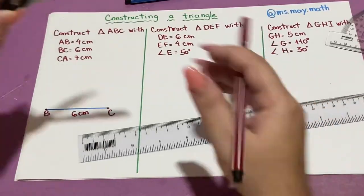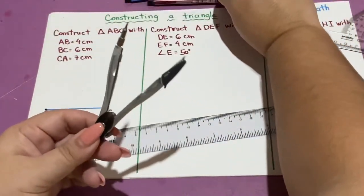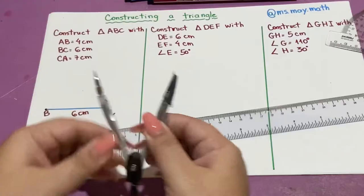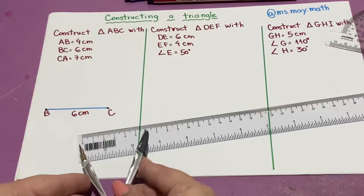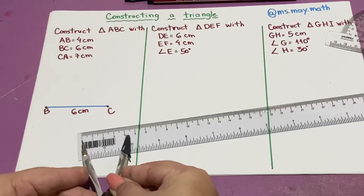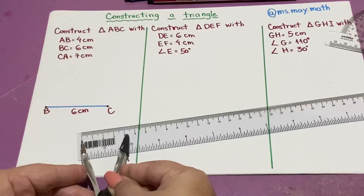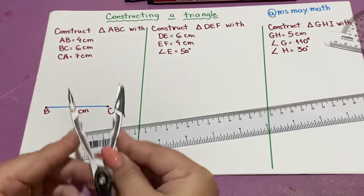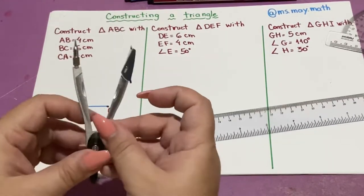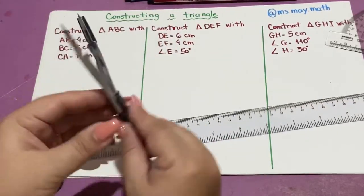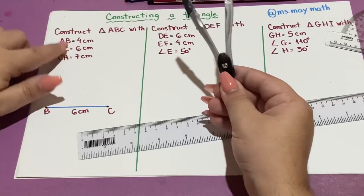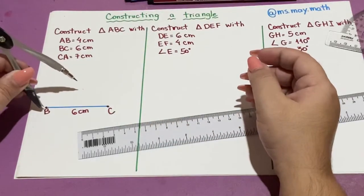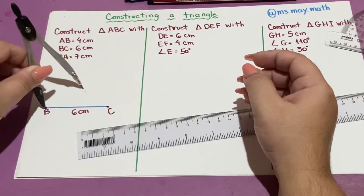Now I'm going to use the compass to give an opening of 4 centimeters. 0 to 4. Put the fixed point on point B and build an arc, a little arc.